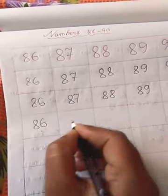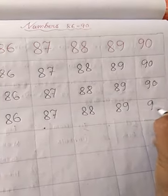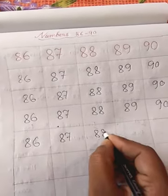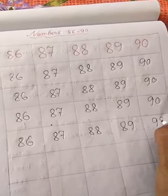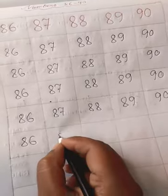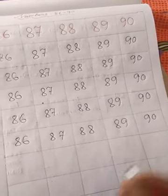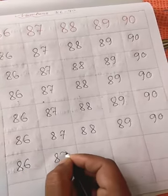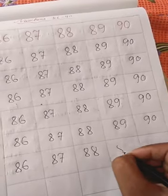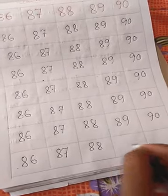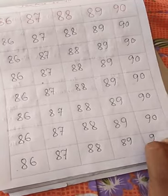Again, 8, 6, 86. 8, 7, 87. 8, 8, 88. 89, 89, 90, 90. We continue reading the numbers multiple times for practice: 86, 87, 88, 89, 90.